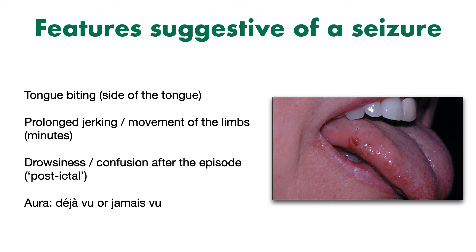Finally, the presence of an aura is important. An aura is a collection of experiences that occur immediately before a seizure. Two examples of an aura are déjà vu and jamais vu. Déjà vu is the feeling that you've lived through the present situation before. Jamais vu is slightly different — this occurs when something happens which seems like it should be familiar, but isn't, so there's a feeling of unfamiliarity. Both of these auras can be more suggestive of a seizure.